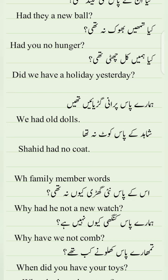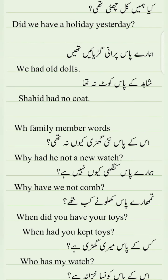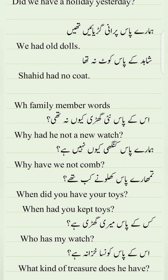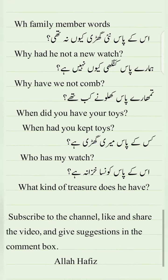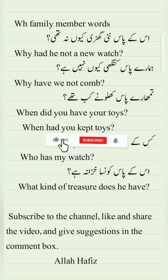W.H. family member words — is ke bare mein padhte hain. Yeh woh words hain jo W.H. se shuru hote hain — jaise when, where, why, who — aur in mein 'how' bhi shamil hota hai. Examples: Us ke paas nayi ghadi kyun na li? — 'Why had he not a new watch?' Hamare paas gangi kyun nahi hain? — 'Why have we not gone?' Tumhare paas khilone kab the? — 'When did you have your toys?' or 'When had you kept toys?' Kiske paas meri ghadi hai? — 'Who has my watch?' Us ke paas kaun sa khazana hai? — 'What kind of child does he have?'